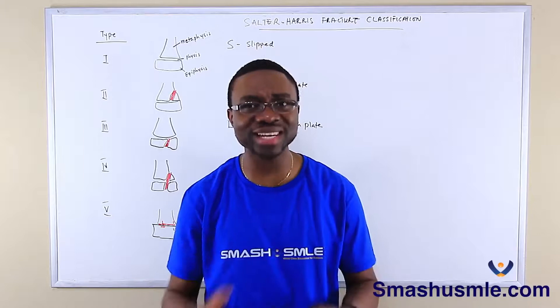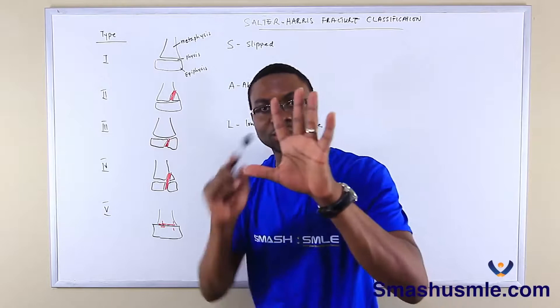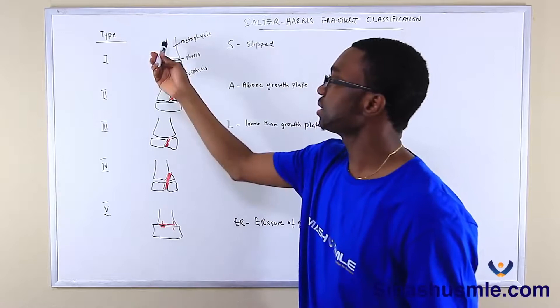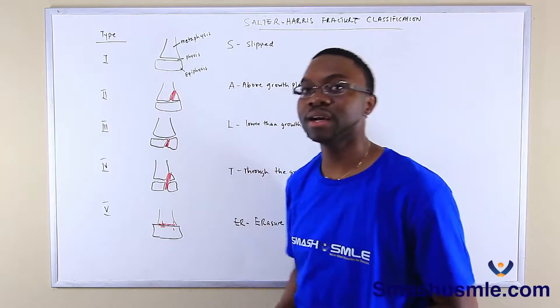First, there are five of them: one, two, three, four, five. And you just have to know the parts of the bone. The top part is the metaphysis, the growth plate is the physis, and the epiphysis is basically the distal part of the bone.